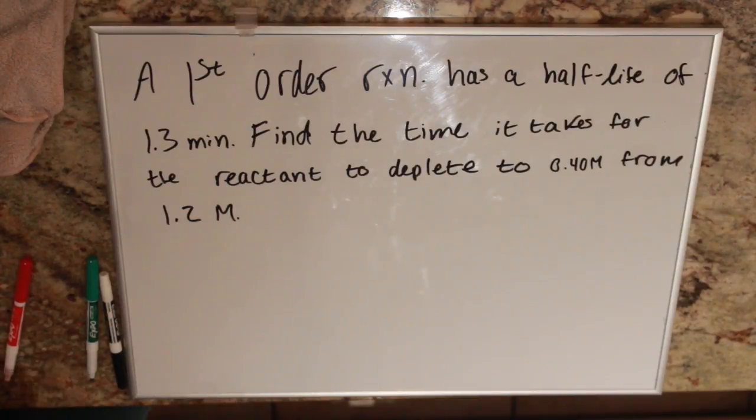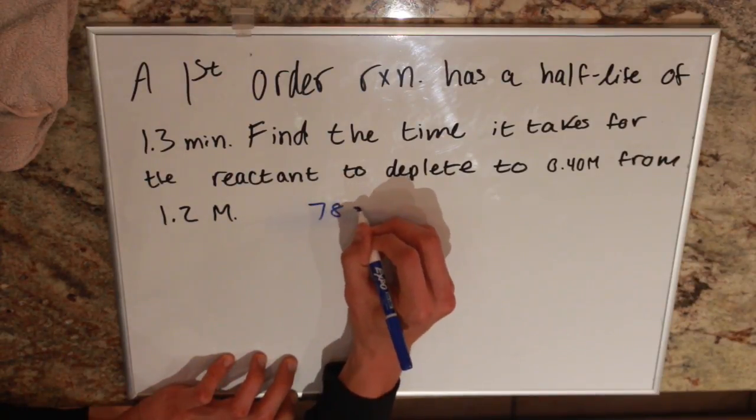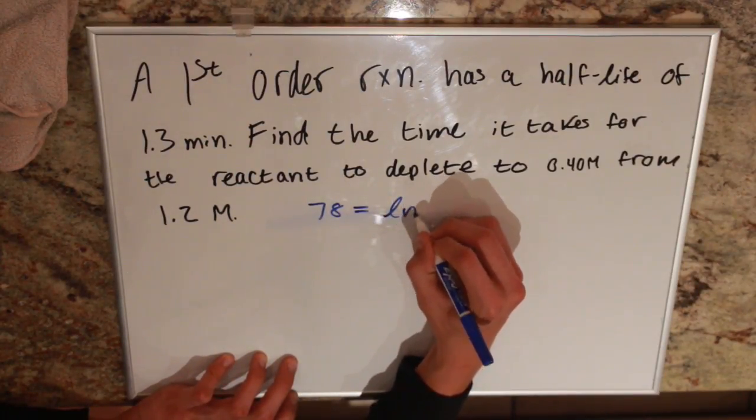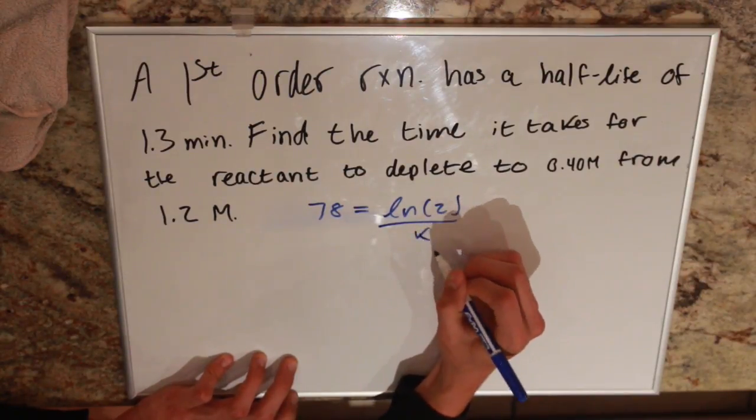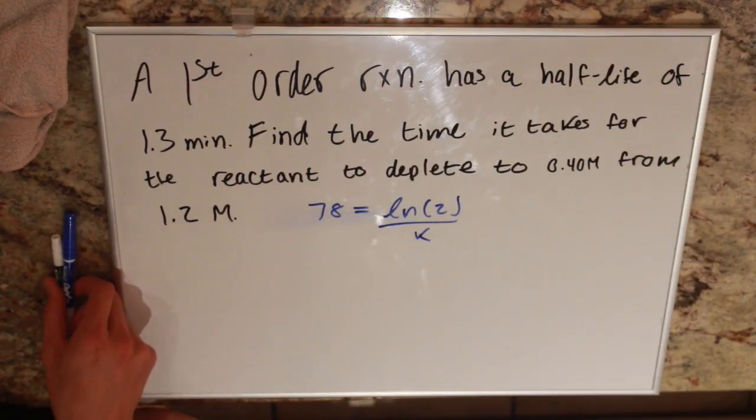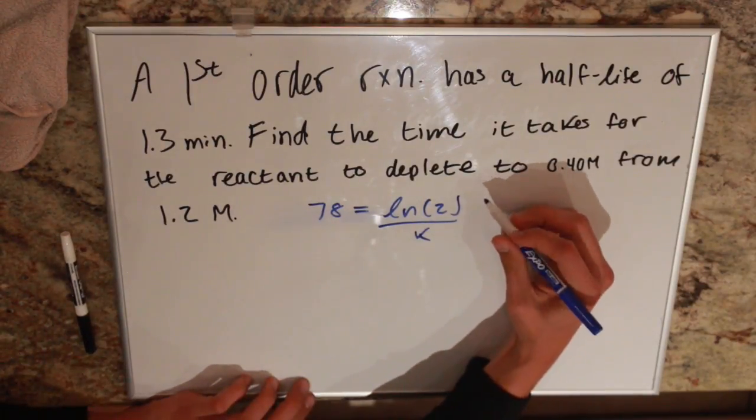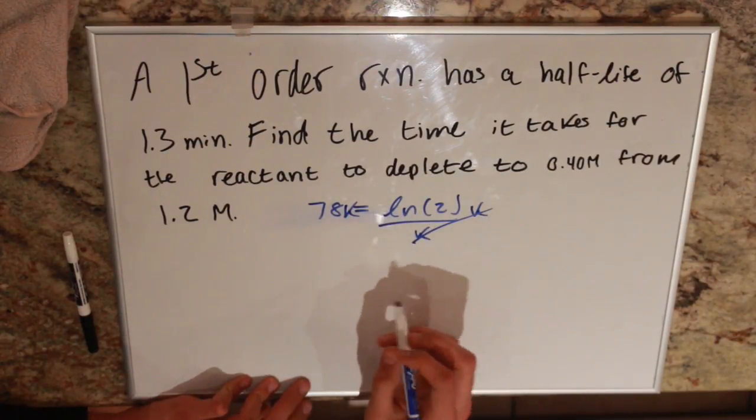We're going to be solving for our rate constant. We have t-half equals natural log of 2 over k. We're solving for k, so our first step is to multiply by k to get it to the other side.